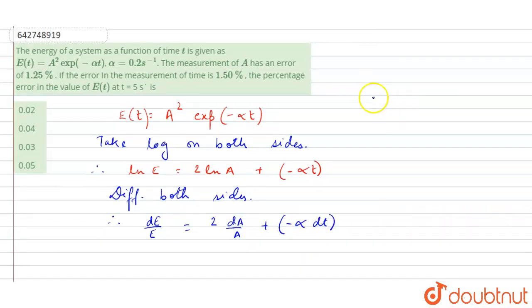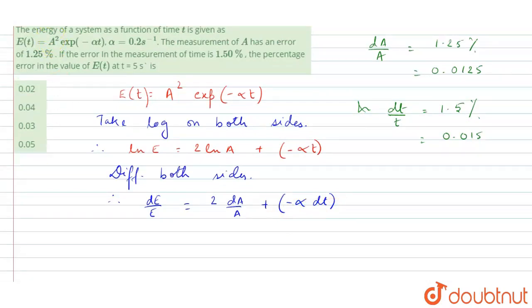Now in the question it is given that dA/A = 1.25 percent, or it will be 0.0125. And dt is 1.5 percent, so that will be 0.015. I'm just removing the percentage.